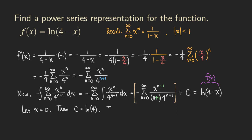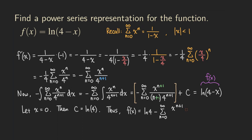So the final power series representation for f is: ln(4 minus x) equals ln 4 minus the summation of x to the n plus one over four to the n plus one times n plus one.